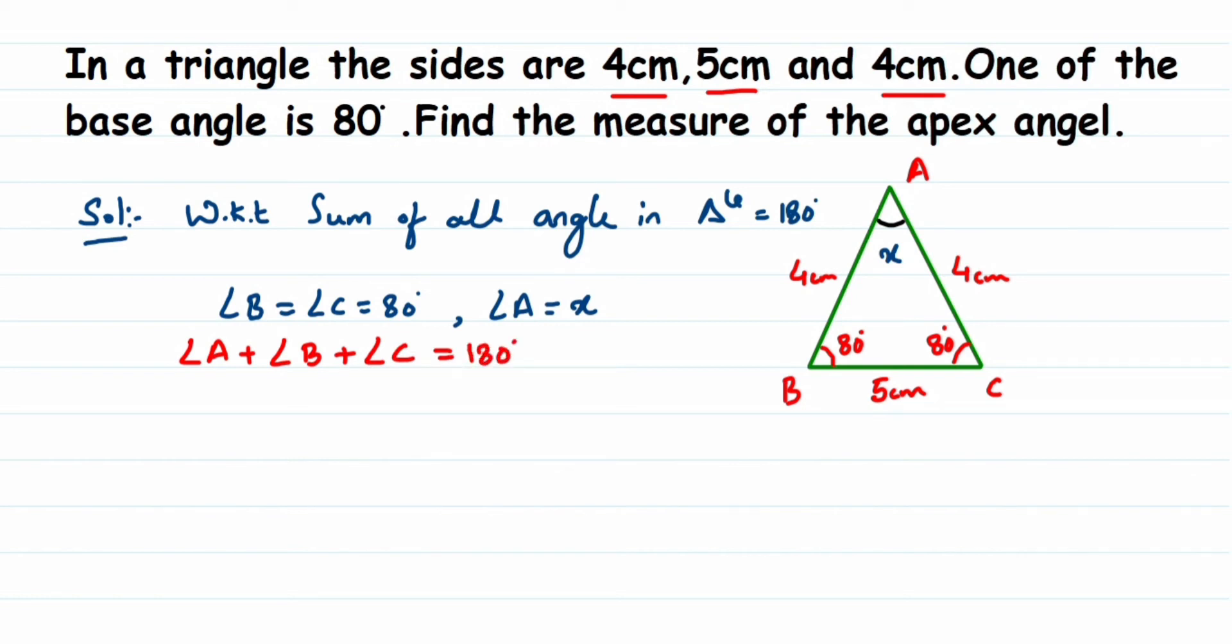Here we have taken angle A as x; you can take any variable. We know angle B and angle C are 80 degrees. Substitute there, so angle A plus angle B plus angle C equals 180 degrees. The sum of all these three will be equal to 180 degrees.